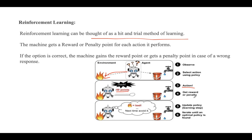After performing the action and receiving the penalty, the agent updates its policy based on that experience. The agent learns automatically using feedback — next time it learns it should not move towards fire. It updates its policy to mark fire as bad, meaning it should avoid that path, and then iterates until an optimal policy is found, moving towards the water instead.